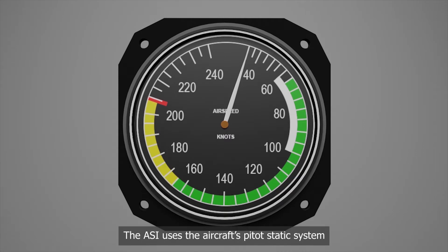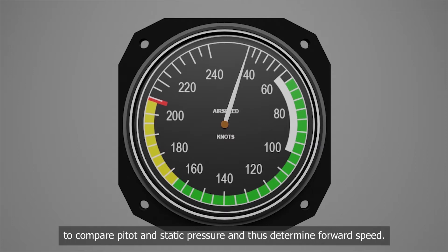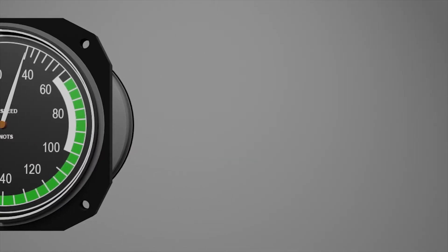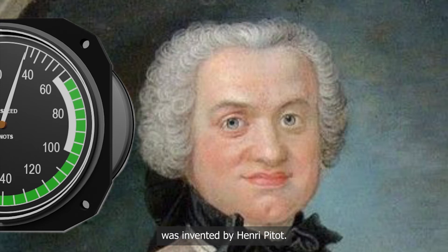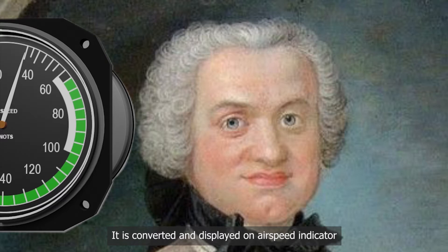The ASI uses the aircraft pitot static system to compare pitot and static pressure and thus determine forward speed. The instrument airspeed indicator was invented by Henry Pitot. It is converted and displayed on the airspeed indicator for the pilot because the pressure difference reflects airspeed.